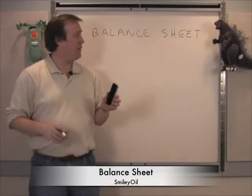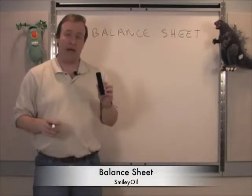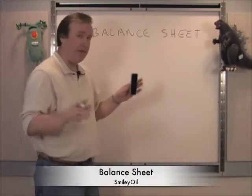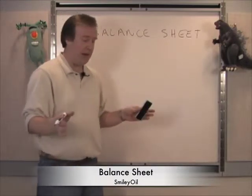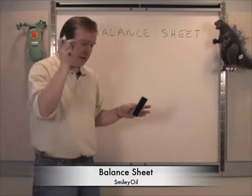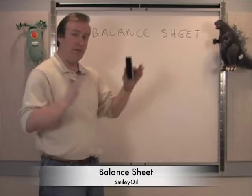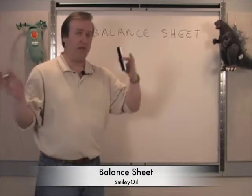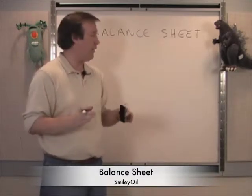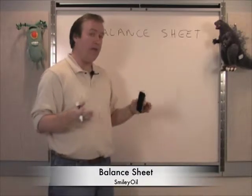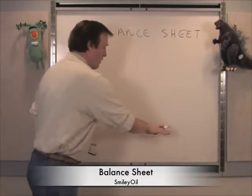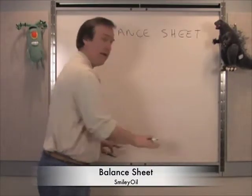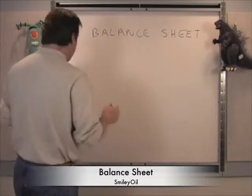Now we finally got to the balance sheet. This is a snapshot in time. On the day that it's issued, this tells you where your cash is, what your assets and liabilities are. The reason it's called a balance sheet is that the two numbers on the assets and liabilities side have to add up and be equal.